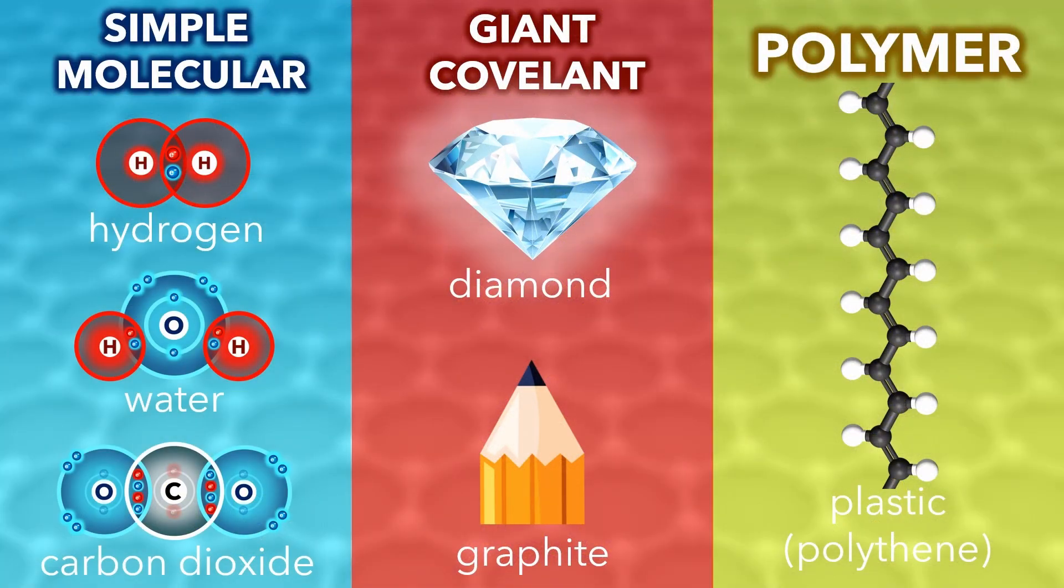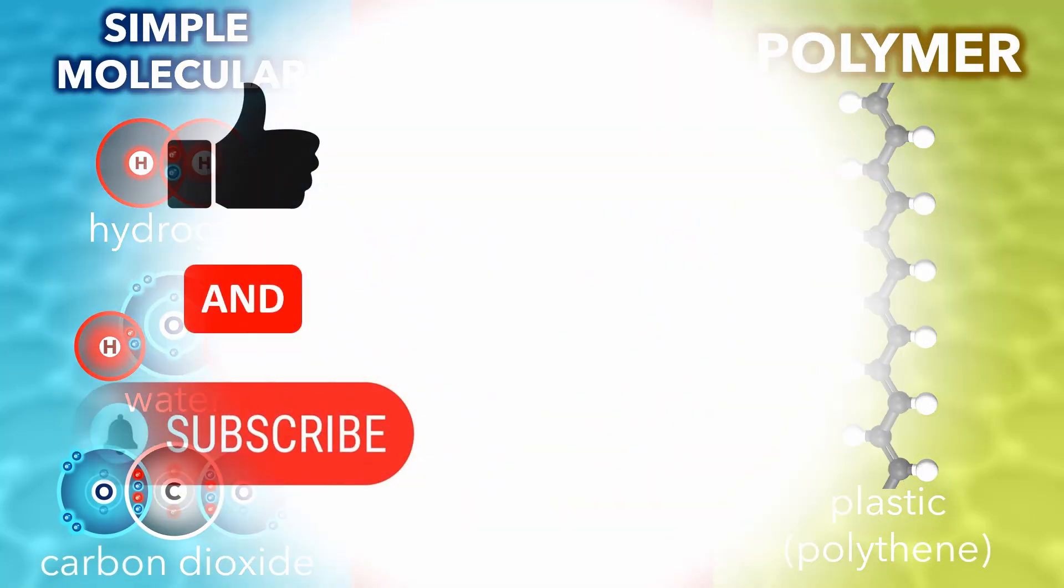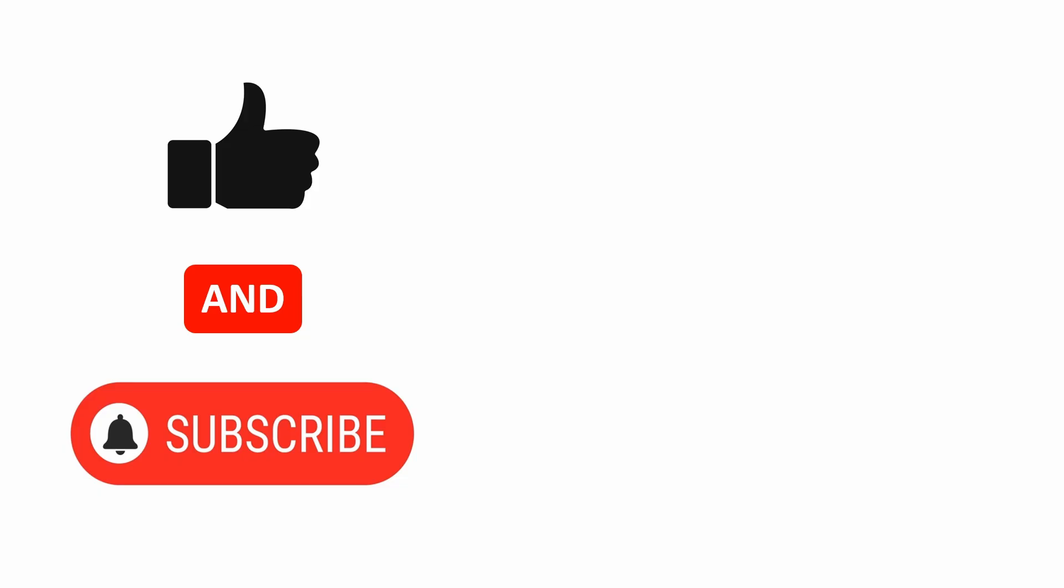So those are the three types of covalent compound, with examples and properties for each. Watch the next video to learn about ionic bonding.